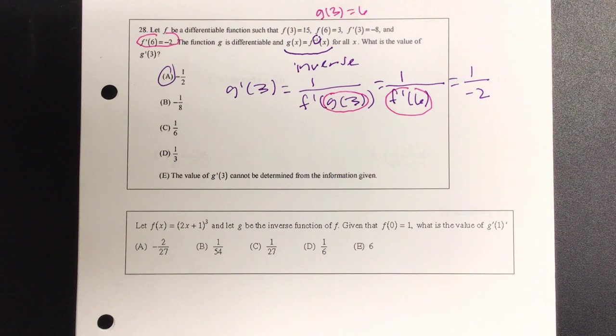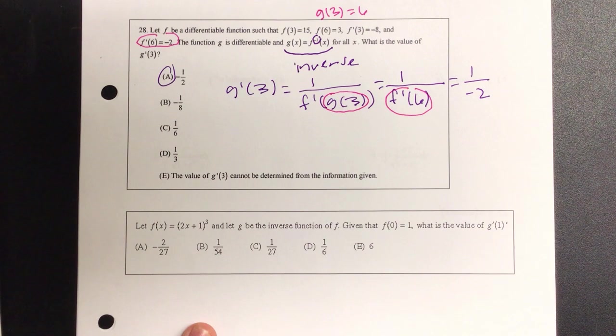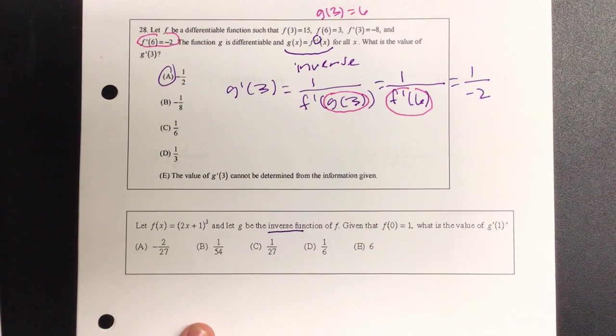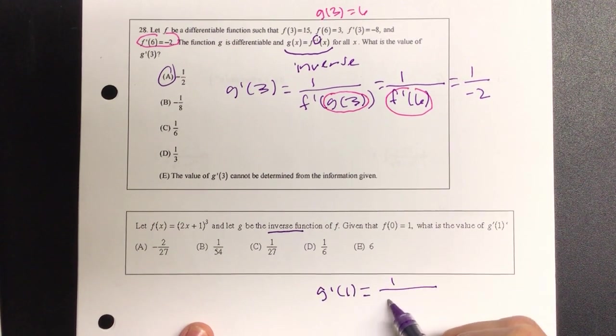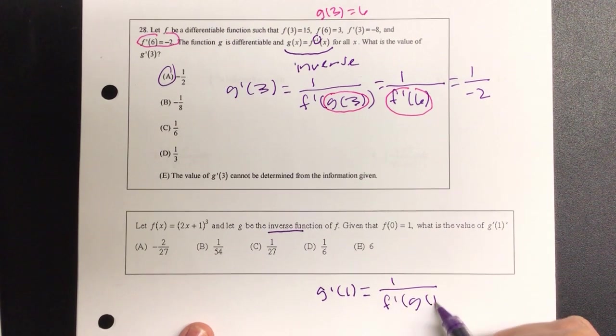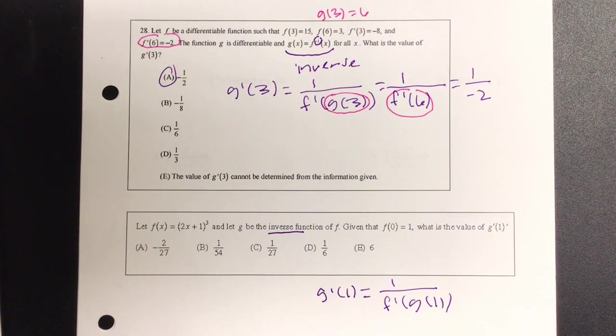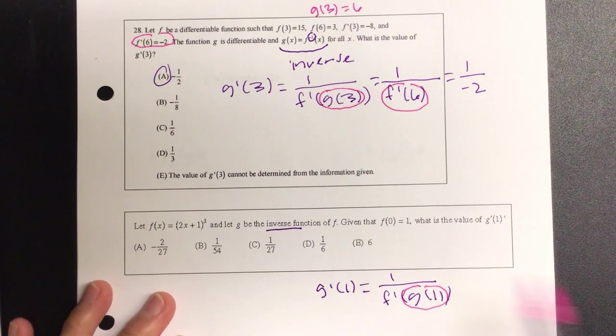Okay Allie, go ahead and read the last one on this page. Let f(x) equal (2x + 1) to the third power, and let g be the inverse function of f, given that f(0) equals 1. What is the value of g'(1)? So it's saying that they are inverses of each other. So let's write out the following. We have g'(1) is 1 all over f'(g(1)). So when I go in the inside, what is my g(1)?